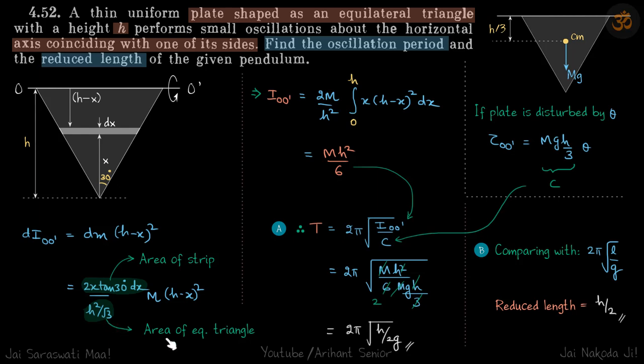Divide by h²/√3. This is the area of an equilateral triangle of height h, times m into (h - x)². So this is the small moment of inertia. So total moment of inertia will be integral of that. Limits of x will be from 0 to h. We do that and we get the value of I O'. So we put that here, we put the value of c here, and we get our time period.